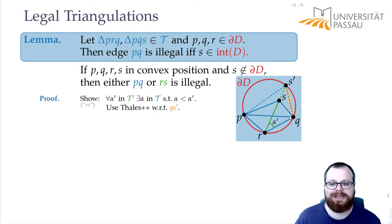The Thales++ tells us, if we look at this angle α' and at this angle between S' and Q, they are exactly the same, because we have the segment and they both lie on the circle.